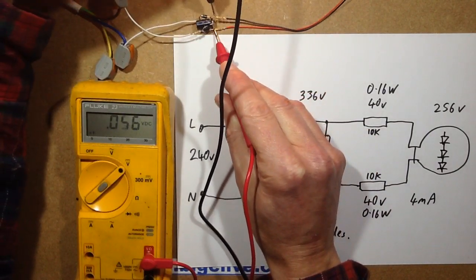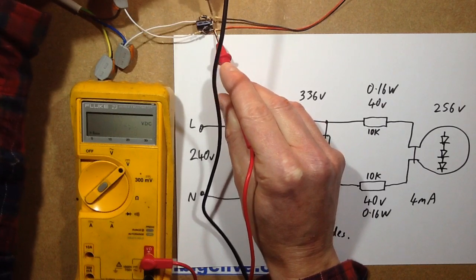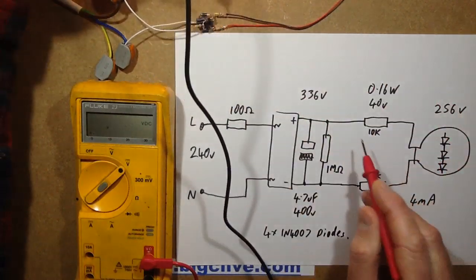So going across the output of that, the voltage is 300 and... nope, 335. Yep, pretty close to what it was before.